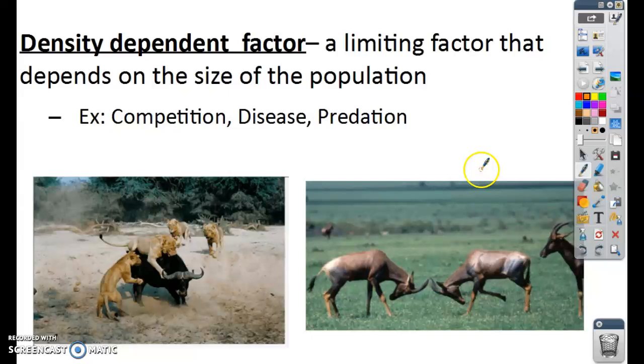Density is just the number of organisms divided by the area. I always use the example, if I have 100 fish in the ocean or 100 fish in a bathtub, which one is more dense? Well, the 100 fish in the bathtub, right, because they're in a smaller area. So density has to do with how many organisms are in a specific area. So a density-dependent factor is a factor that limits population growth, but it depends on the size of the population. Typically, this type of factor has more of an influence when we have a bigger population.